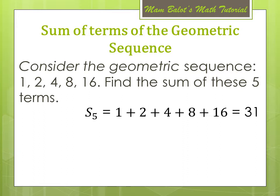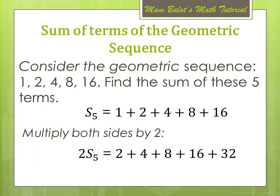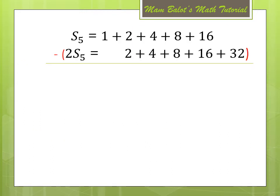But let us consider another process in order to have a pattern in how to derive the formula of the sum of the geometric sequence. We consider multiplying both sides by 2, since 2 is the common ratio. So the equation becomes 2·S sub 5 is equal to 2 plus 4 plus 8 plus 16 plus 32. So all the terms on the right side are multiplied by 2. Now let us subtract the two equations, aligning the same terms so that we can cancel out when we subtract.